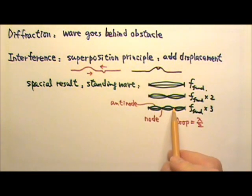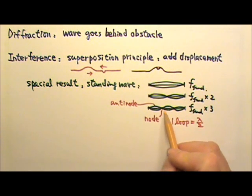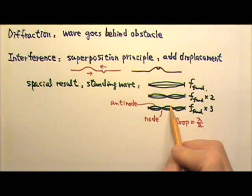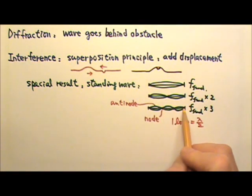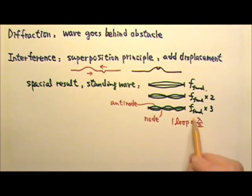The length of one loop is always half a wavelength. Because this is one loop and one wavelength would go up, down, and then back. So this would be one wavelength. So one loop is always half a wavelength.